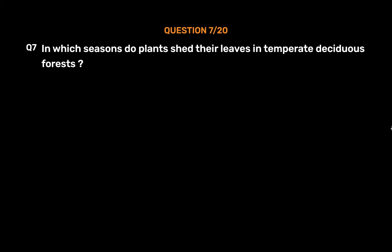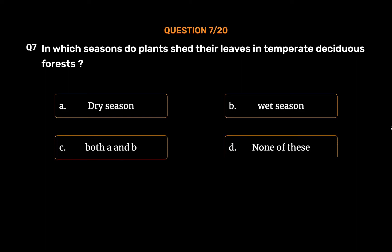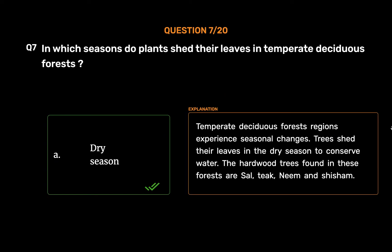Question number 7: In which season do plants shed their leaves in temperate deciduous forests? Option A: Dry season. Option B: Wet season. Option C: Both A and B. Option D: None of these. The correct answer is Option A: Dry season. Temperate deciduous forest regions experience seasonal changes. Trees shed their leaves in the dry season to conserve water. The hardwood trees found in these forests are sal, teak, neem, and shisham.